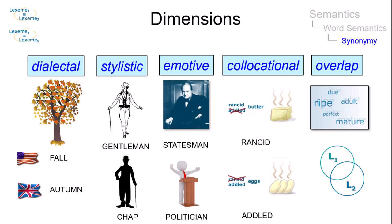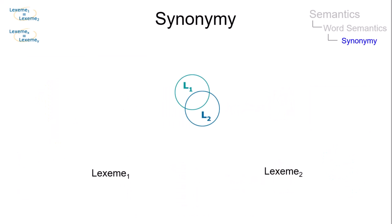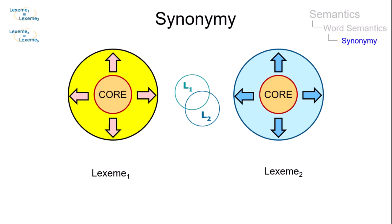With these dimensions in mind, synonymy can best be defined as relatedness in meaning. That is, two lexemes have identical semantic cores but different extensions.